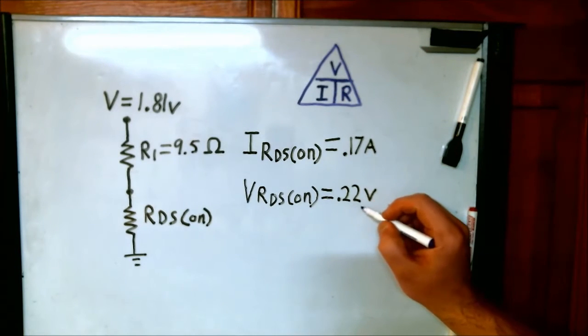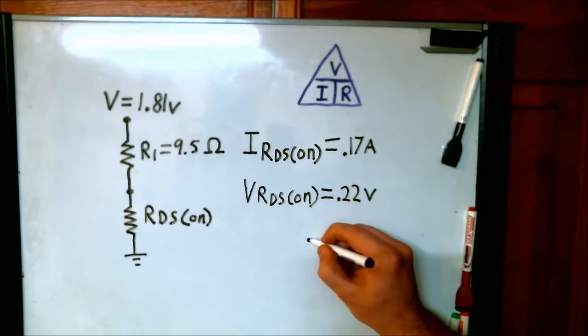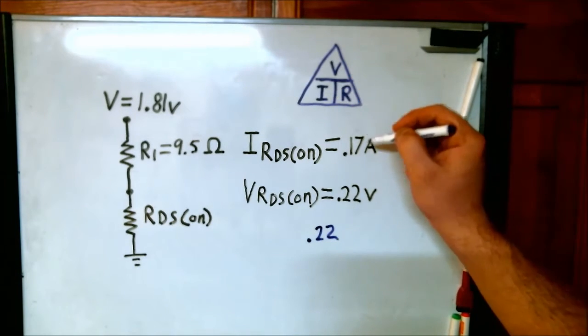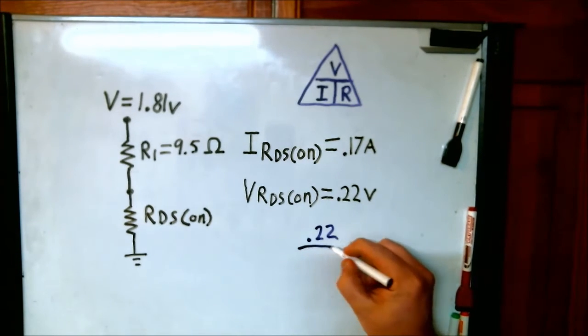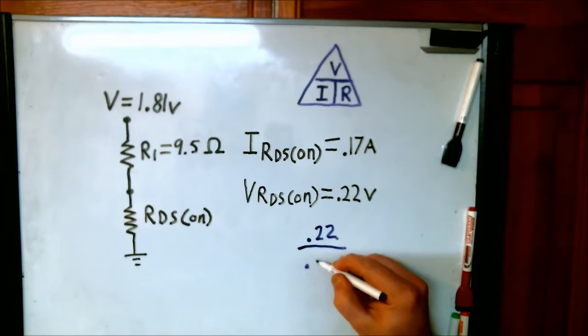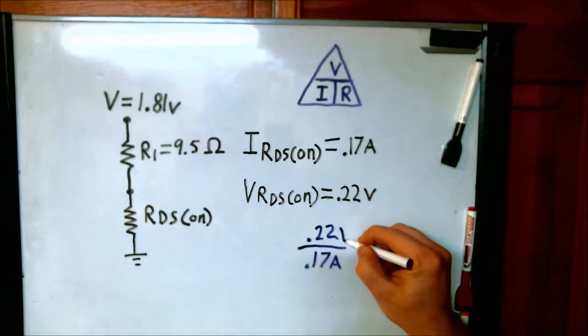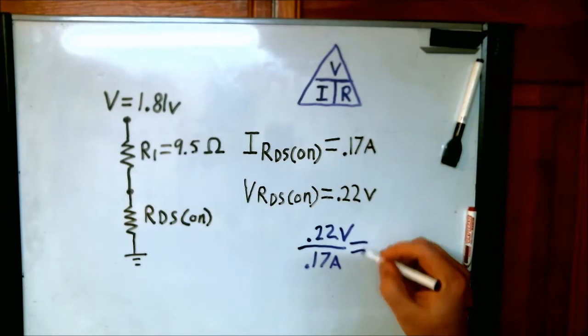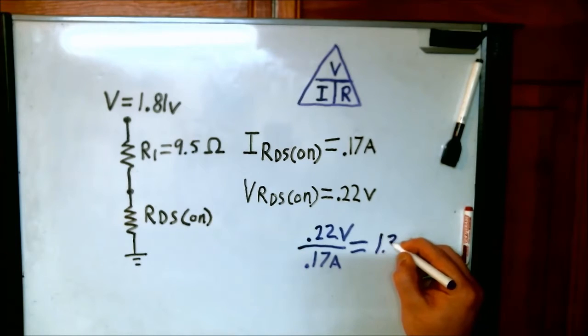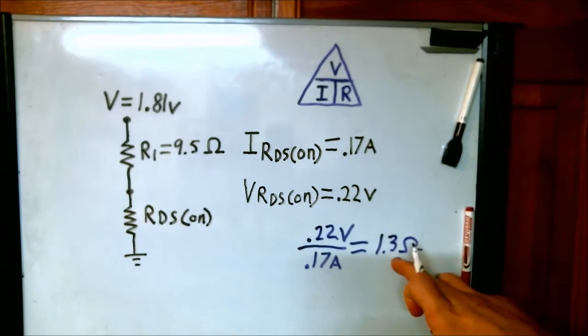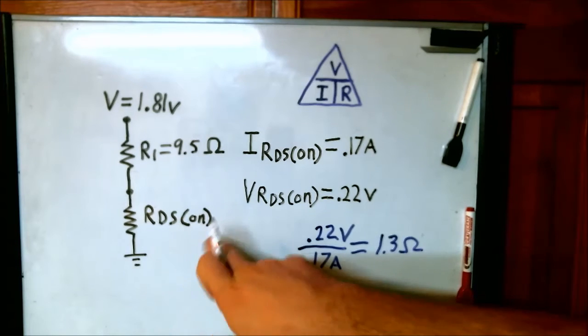The voltage is 0.22 volts divided by the current, 0.17 amps, which equals 1.3 ohms. There we go. We have just found the RDS(ON).